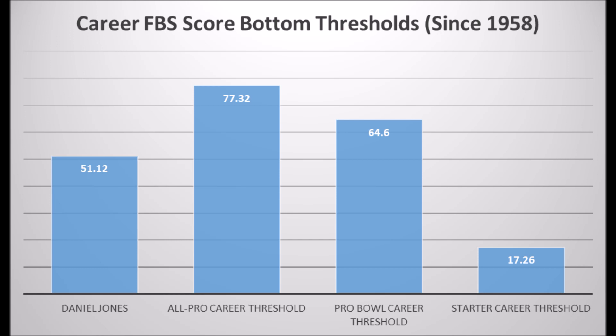Daniel Jones has a 51.12 career FBS score. You take all of his scores at Duke — every single season — score him based on the method described in the description, add it all up, and his average was 51.12 out of 100. The all-pro career threshold is 77.32, the pro bowl career threshold is 64.6, and the starter career threshold is 17.26.